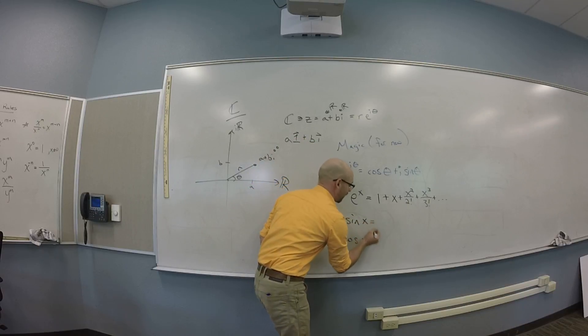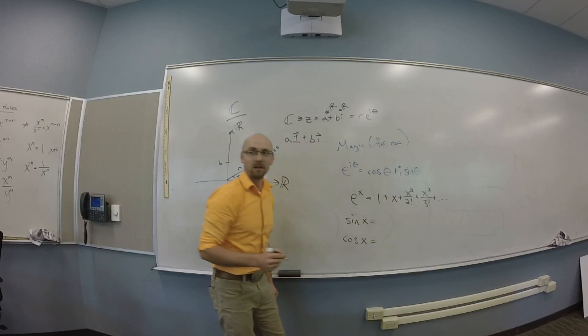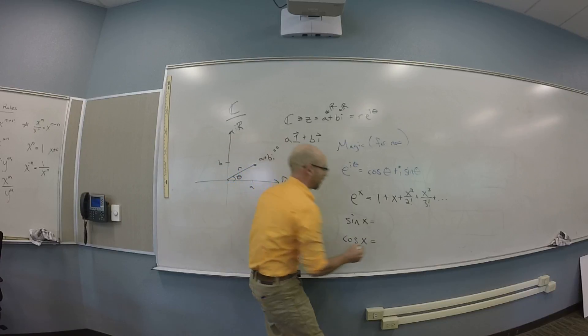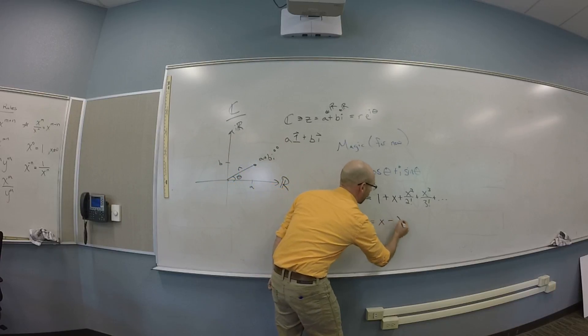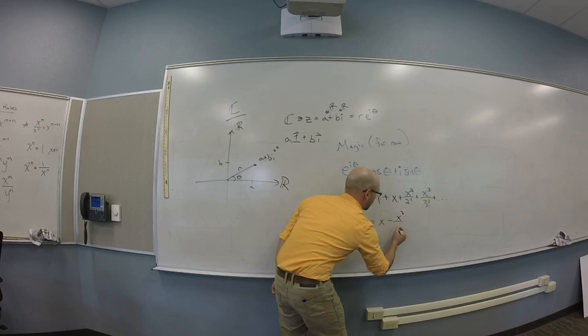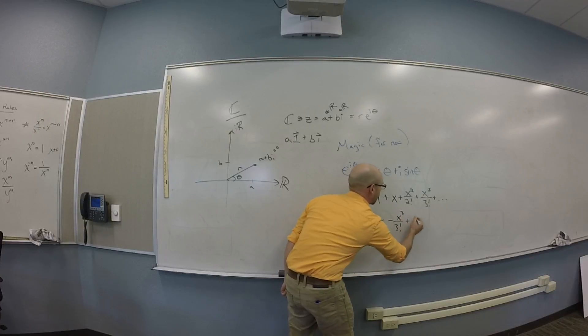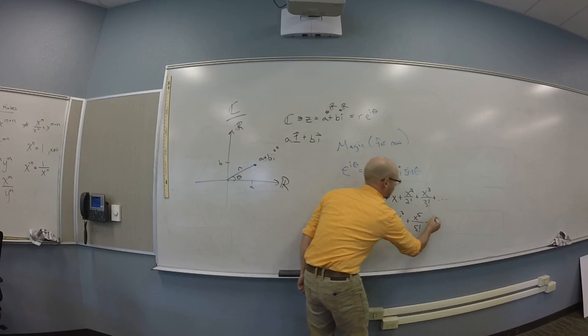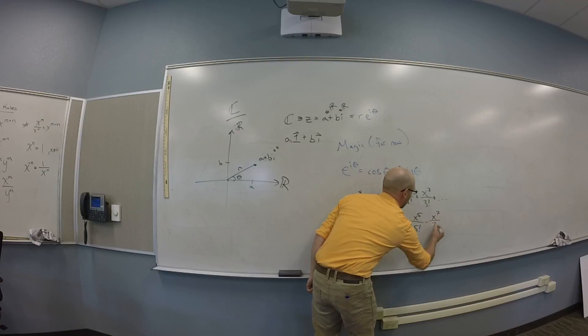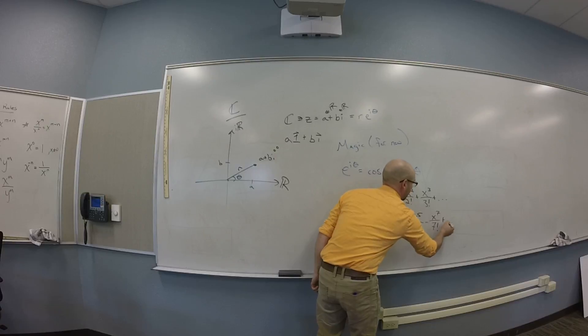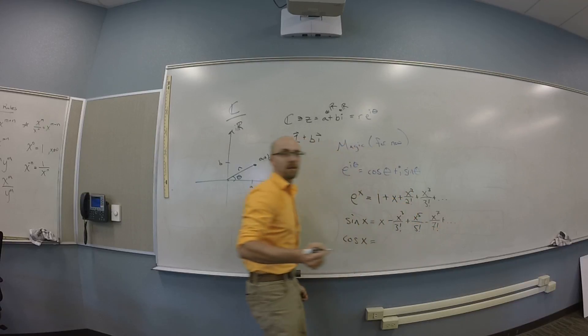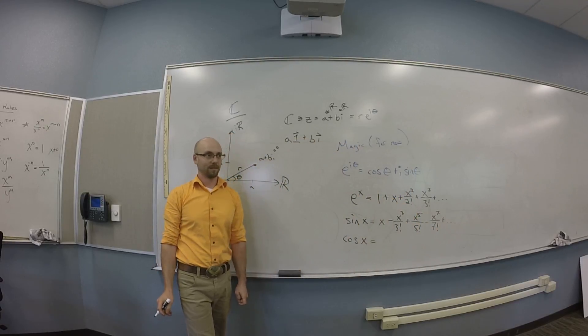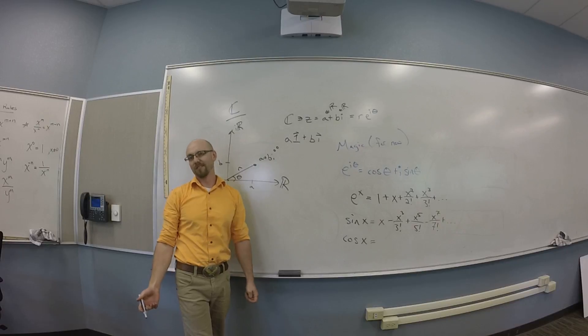And then we're going to do the same thing for sine and cosine. So when we build it for sine, we're going to get X minus X cubed over 3 factorial plus X to the 5th over 5 factorial minus X to the 7th over 7 factorial and kind of so forth. I saw that. Yeah.